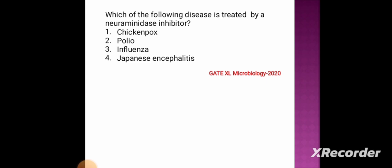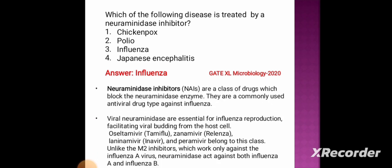Next question: which of the following diseases is treated by a neuraminidase inhibitor? Option 1: chickenpox, option 2: polio, option 3: influenza, option 4: Japanese encephalitis. The correct answer is influenza. Neuraminidase inhibitors are a class of drugs that block the neuraminidase enzyme. They are a commonly used antiviral drug type against influenza. The viral neuraminidase is essential for infection, facilitating viral budding from host cells.